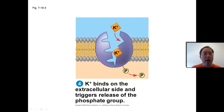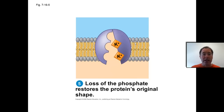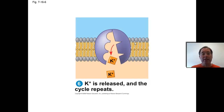As a result, on the other side of the protein there are notches that fit potassium ions. Two potassium ions are grabbed by the cell and brought to the inside of the cell membrane. The loss of the phosphate then restores the protein's original shape, the potassium ions are released inside, and the cycle repeats itself.